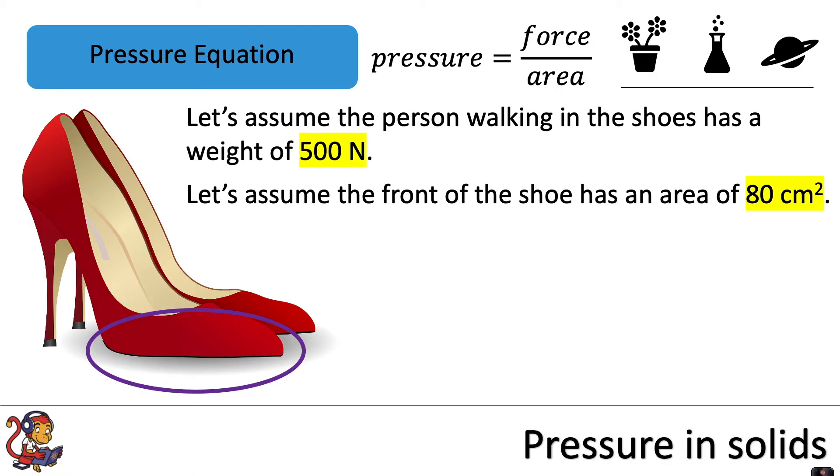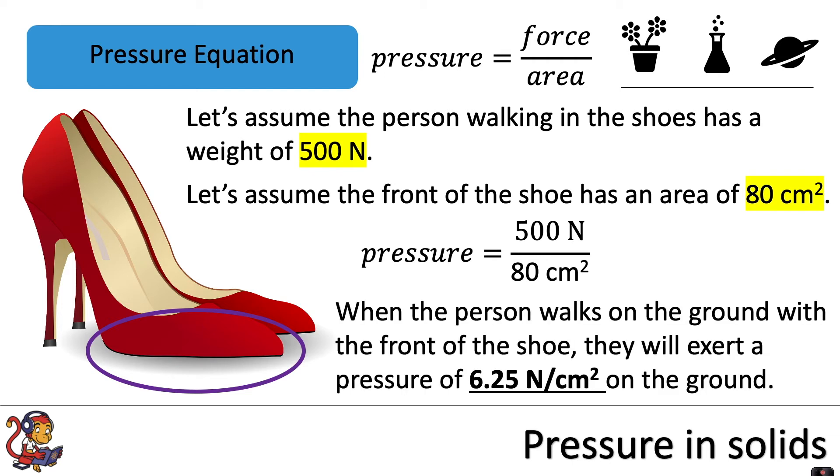If we wanted to calculate the pressure that they exert on the ground with the front of just one shoe, we could take the force which is 500 newtons and divide that by the area which is 80 centimeters squared. So 500 newtons divided by 80 centimeters squared, and we can work out that when the person walks on the ground with the front of the shoe they will exert a pressure of 6.25 newtons per centimeter squared on the ground.